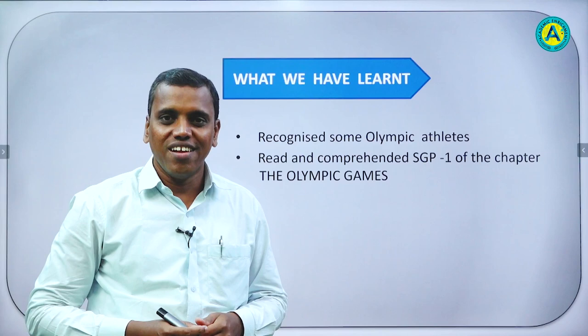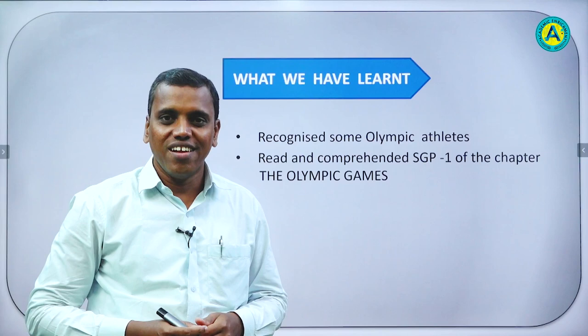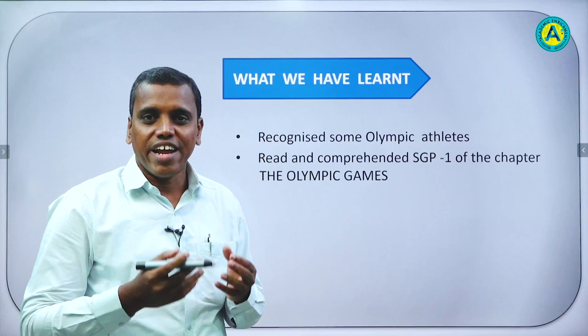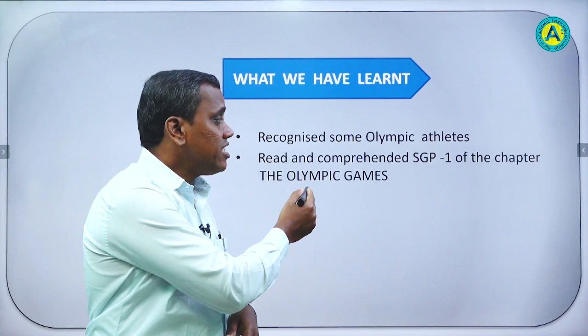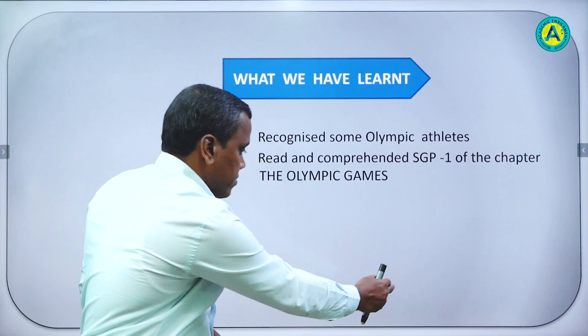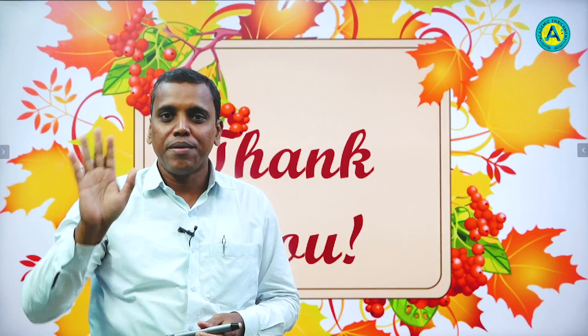What we have learned today: we recognized some symbols and photographs related to the Olympics and Olympic athletes. And we read and comprehended HGP 1 of the chapter 'The Olympic Games'. This is all for today's class. Thank you, students. Bye-bye.